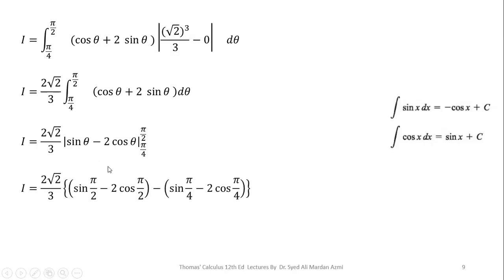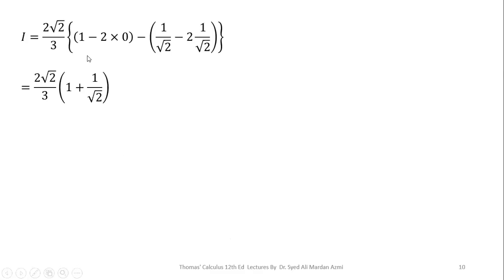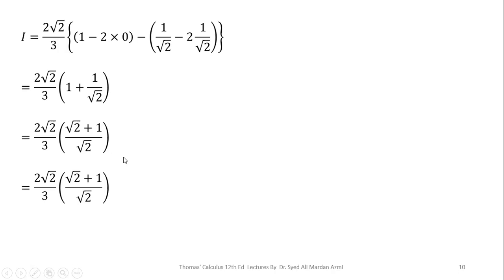Applying the limits, we substitute the values: sin(pi/2) equals 1, cos(pi/2) equals 0, sin(pi/4) equals 1 over square root of 2, and cos(pi/4) equals 1 over square root of 2. After simplification, 1 minus 2 minus 1 over square root of 2 minus 2 over square root of 2 becomes 1 plus 1 over square root of 2. Taking the LCM and simplifying, square root of 2 terms cancel, and our final answer is 2 over 3 times (square root of 2 plus 1).